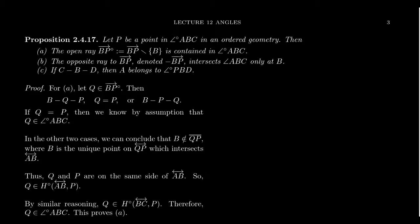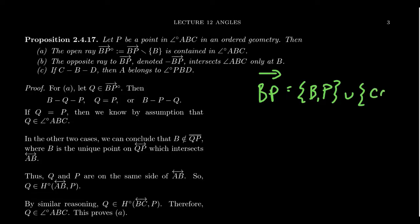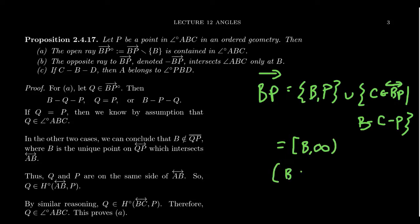We've defined previously the notion of a ray. We have ray BP, defined to be the points B and P, together with all the points C on the line determined by BP such that C is between B and P. We've also introduced orderings of lines in lecture 11. So we can think of this ray as the interval from B towards infinity, assuming B is less than P. If B were greater than P, it would be from negative infinity to B.